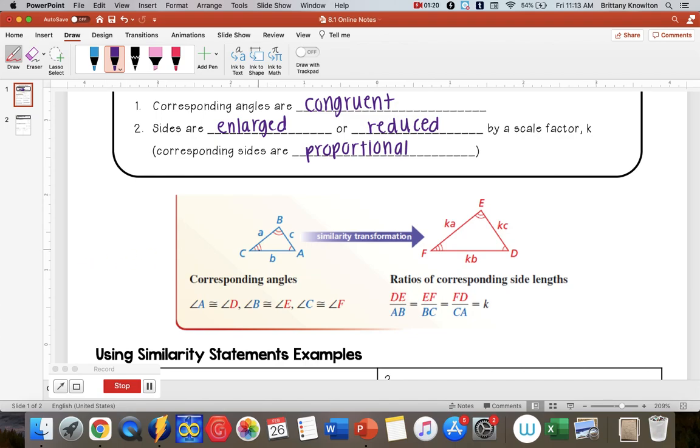And I see that all of my angles are congruent. So like angle A is congruent to angle D, angle B is congruent to angle E, angle C is congruent to angle F. And I know that because of those arc marks.